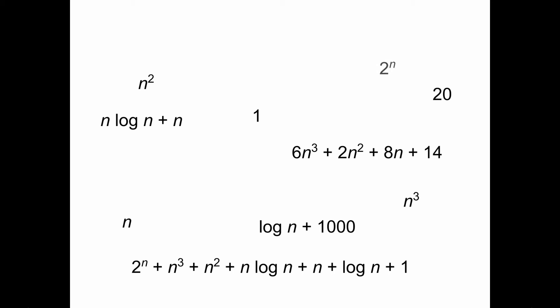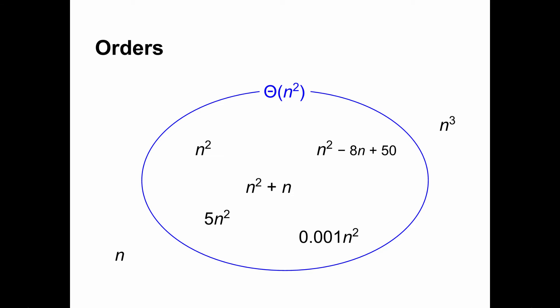There are many different functions that might describe the running time of one algorithm or another. Getting from a description of an algorithm to a running time function is beyond the scope of this video, but what do we do once we have such a function? How can we compare them? It seems hopelessly complicated. Fortunately, there is a huge shortcut. Functions can be grouped into orders. An order is a set of functions. Here are some functions in the order n squared, which is written with an uppercase Greek letter theta. The functions n and n cubed are not in this order.